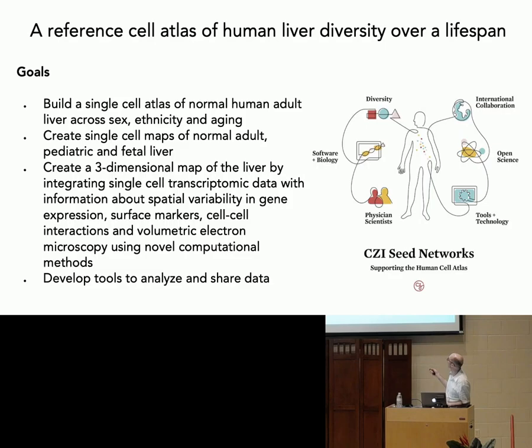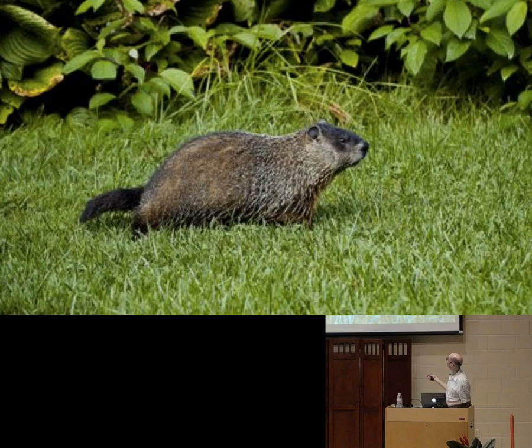We now have funding from the Chan Zuckerberg Initiative, with about 19 other people across 10 different countries, to map a lot of different types of liver samples in different ways and different ages. We want to create a three-dimensional map so that eventually we can have a more spatial map, and we're developing a lot of interesting tools to analyze and share this data.